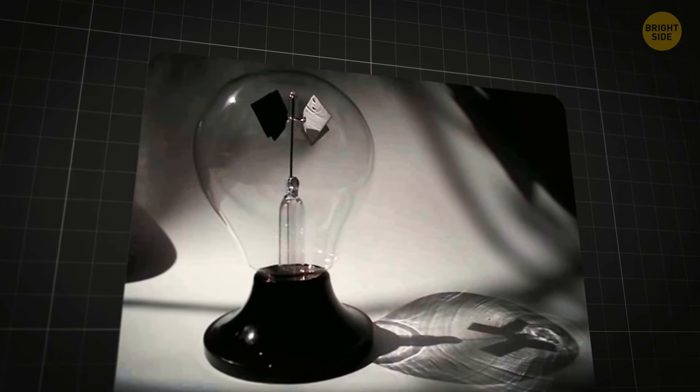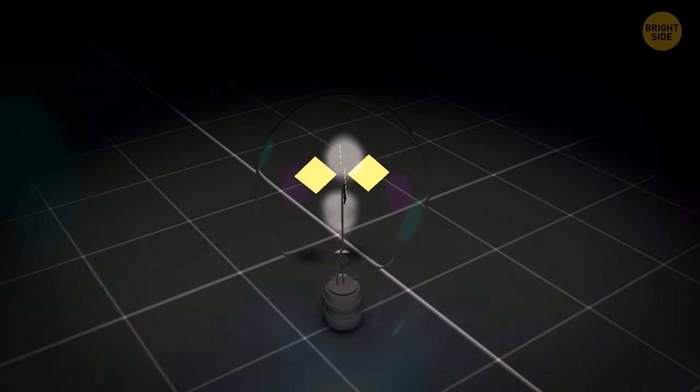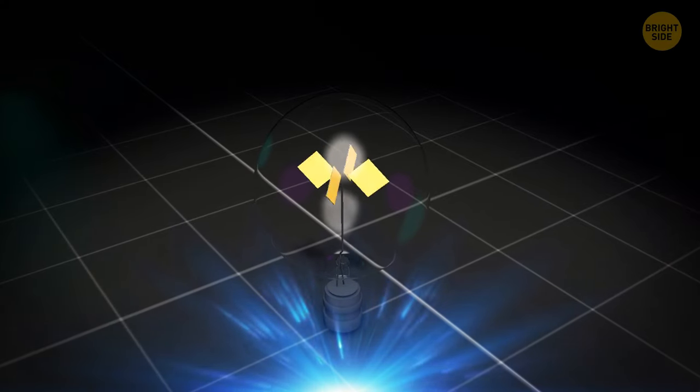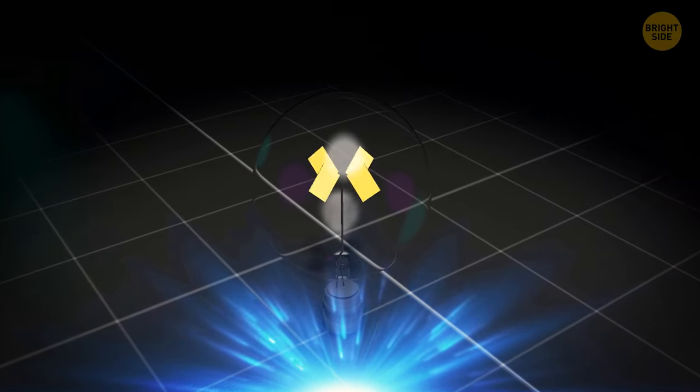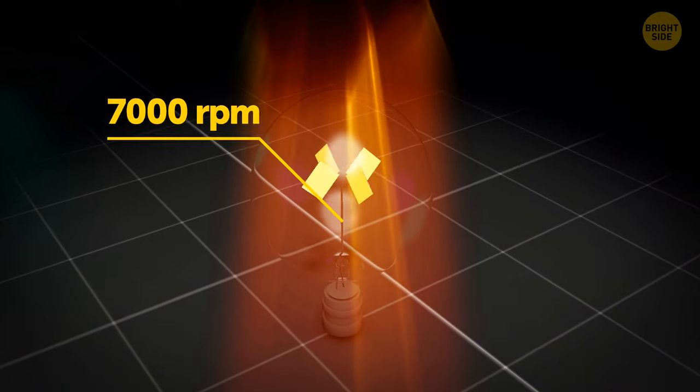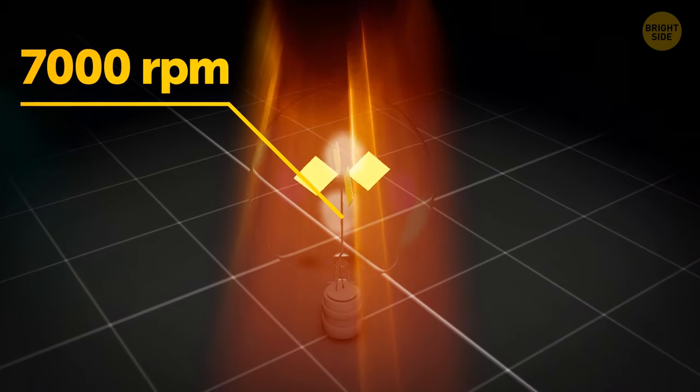Inside, there is no air, just a vacuum. When you shine light on the veins, they start to spin. The stronger the light, the faster the spinning. In bright sunlight, the windmill can spin at several thousand rotations per minute.